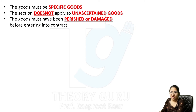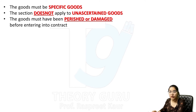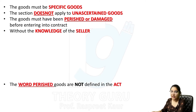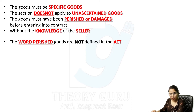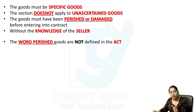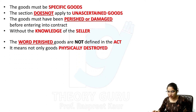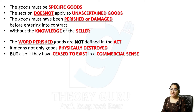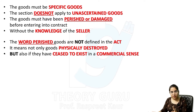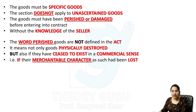दूसरी condition: the goods must have been perished or damaged before entering into contract, and without the knowledge of the seller. अब word 'perished' — यह act के अंदर specifically define नहीं किया गया। But it means not only goods physically destroyed; इसका एक और मतलब है कि commercial sense में वो चीज़ exist ही नहीं कर रही, या उसने अपना mercantable character खो दिया।